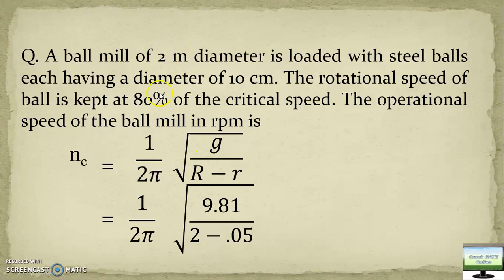We know the formula of critical speed. The value of g is 9.81. Then this R is the radius of ball mill. It is given 2 meter diameter. See, here it is radius but given is diameter. Don't make mistakes. So here it is 1. I wrote here 2 deliberately so you can see this is not 2, this will be 1. Minus r, this r is the diameter of steel ball. That is 10 centimeters, so radius is 5 centimeters, which is 0.05.